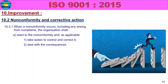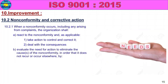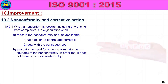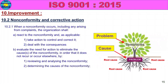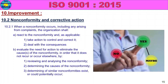Express with the consequences — decide and take action. Evaluate the need for action to eliminate the causes of the non-conformity in order that it does not occur or occur elsewhere. First, reviewing and analyzing the nonconformity — what is the problem? Determining the causes of the non-conformity. Determining if similar non-conformities exist or could potentially occur.